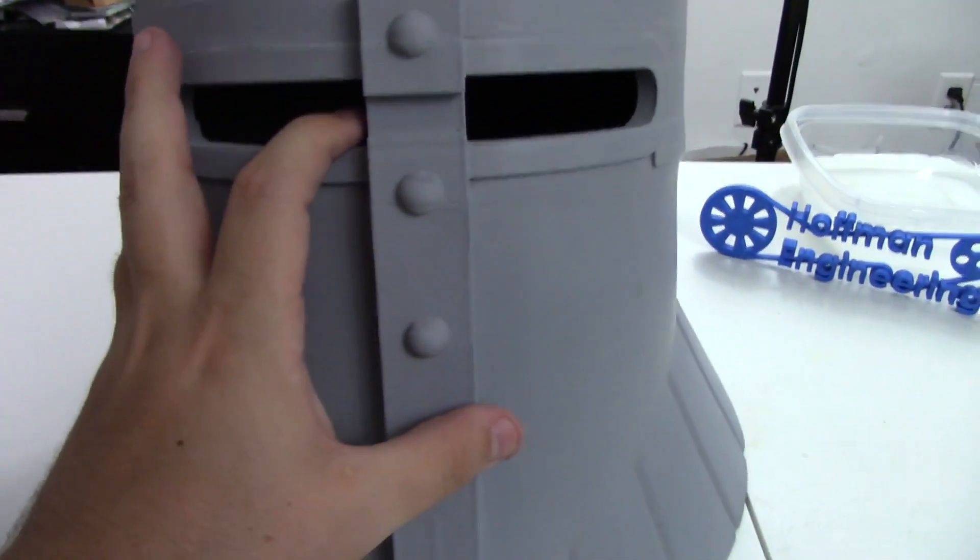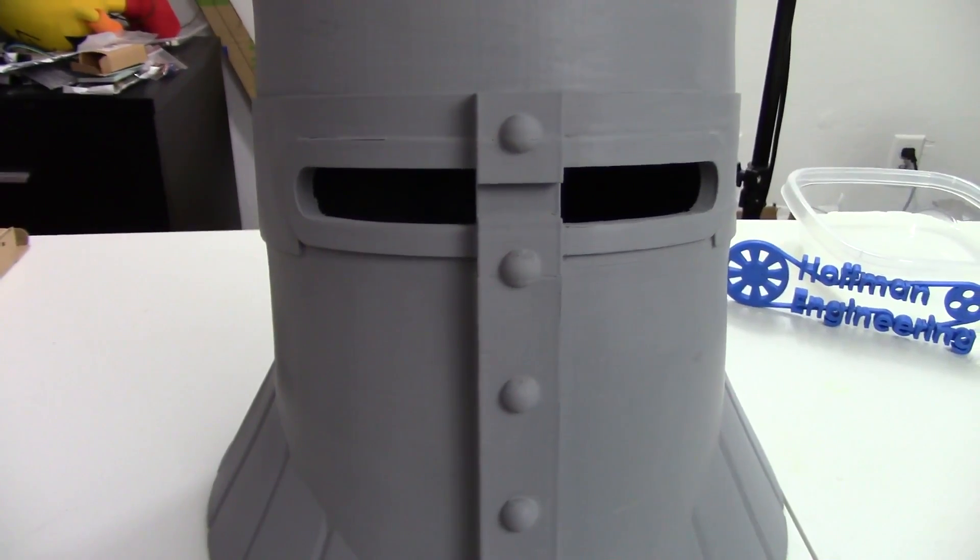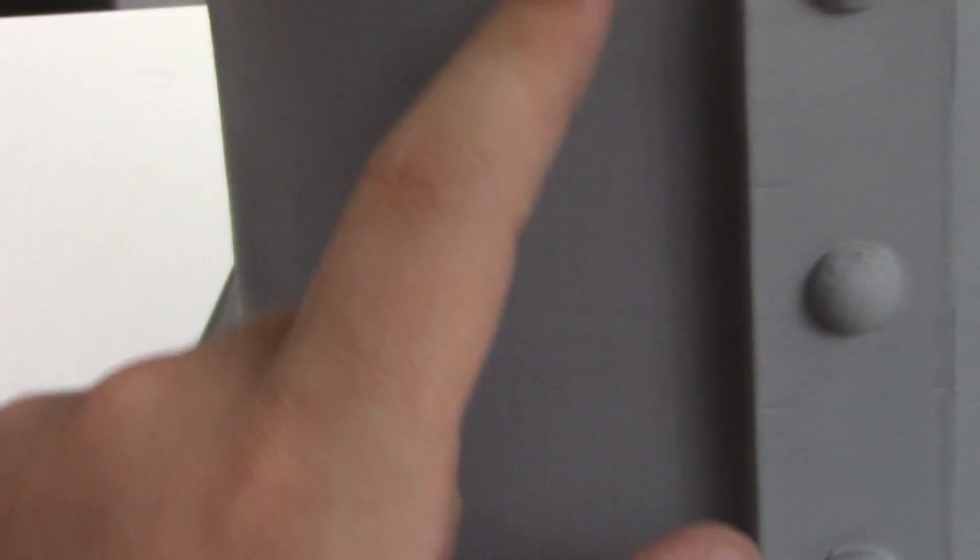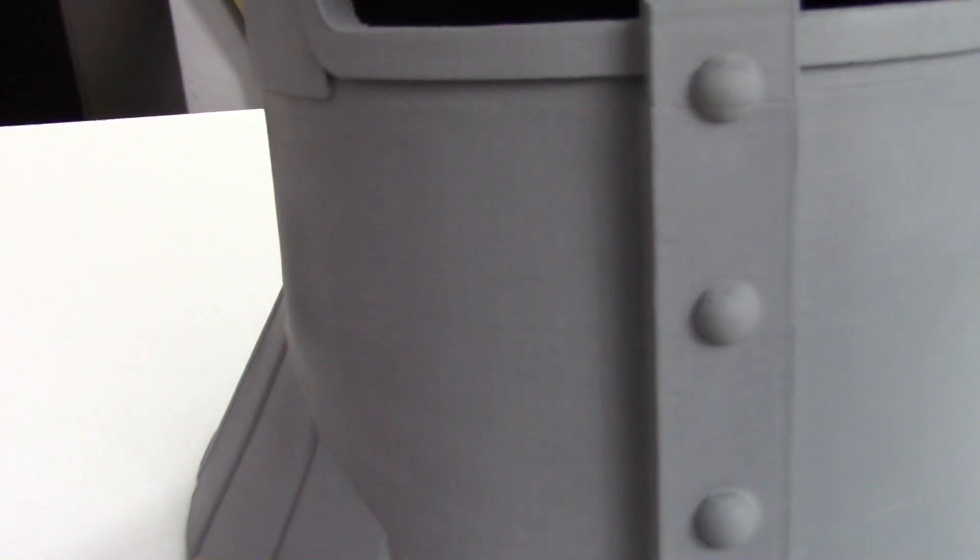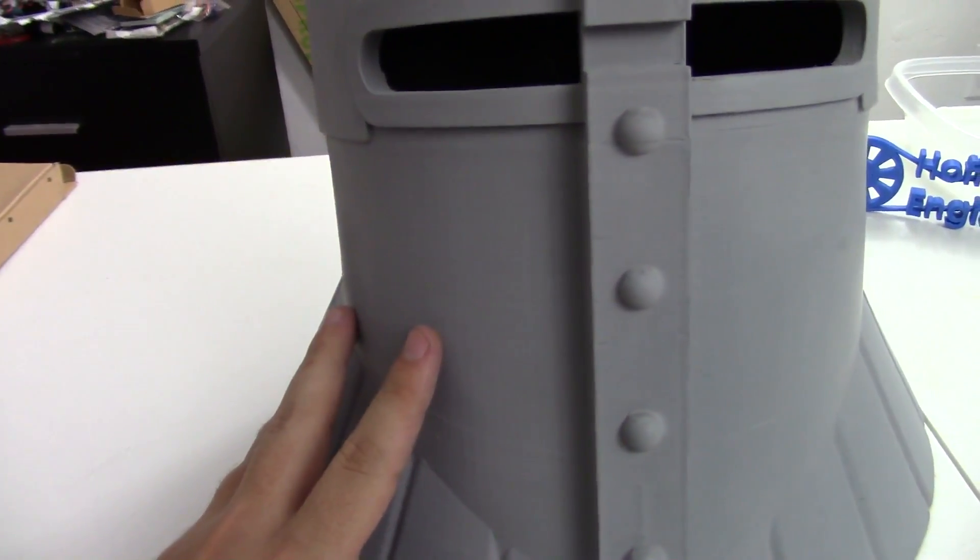Let's take a look at how the sanding actually went. First I'd like to point out the unsanded side so we know what to look for. If we zoom in to the unsanded side, you can see not only are there layers, horizontal lines showing each of the individual layers of the 3D print.